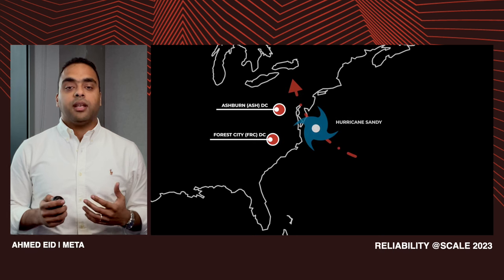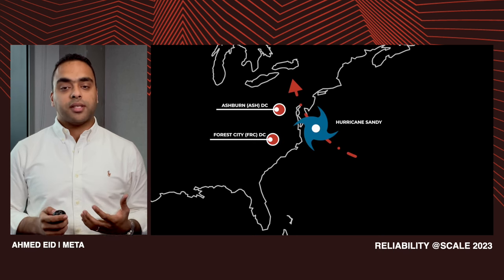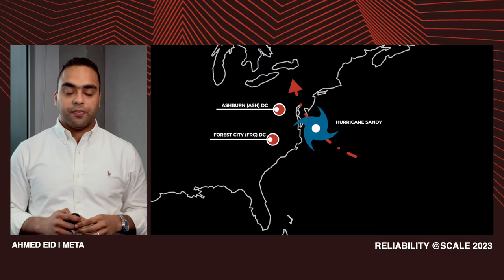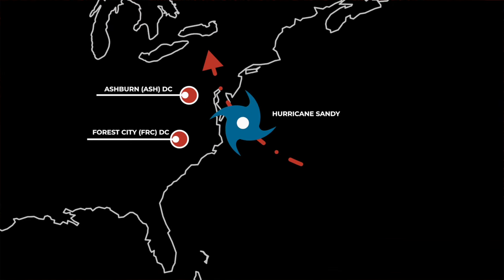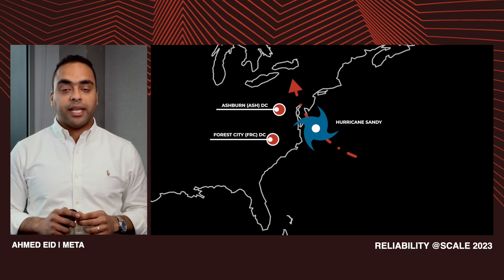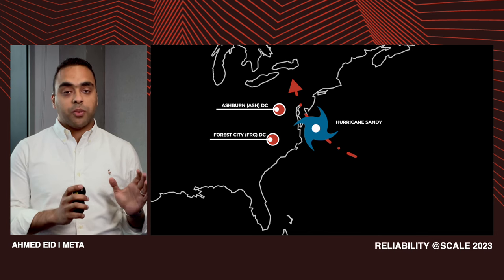Let's start with some historical context on how the disaster recovery program at Meta was born. In October 2012, Hurricane Sandy came within 30 miles of our Ashburn data center and within a few hundred miles of our Forest City data center. The destruction of either data center would have been devastating to our business, since Ashburn was the fiber optic cable hub that connected us to the rest of the world.